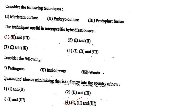Next one: Consider the following techniques — meristem culture, embryo culture, protoplast fusion. The techniques useful in interspecific hybridization are option 1, 2 and 3; option 2, 1 and 2; option 3, 1 and 3; option 4, 1, 2 and 3. Answer is option 1: 2 and 3 — that is embryo culture and protoplast fusion.